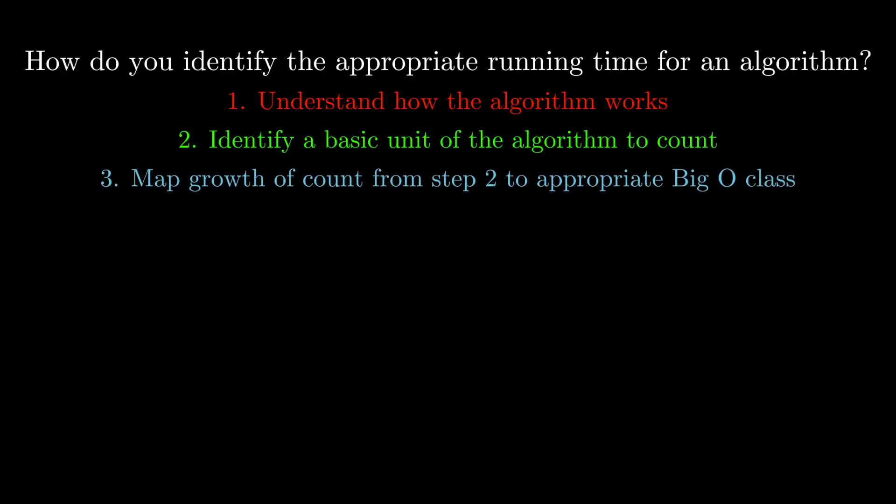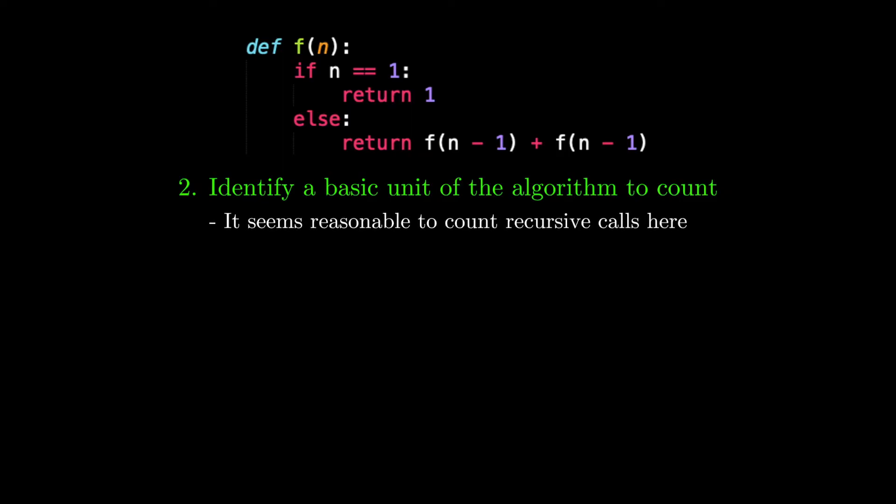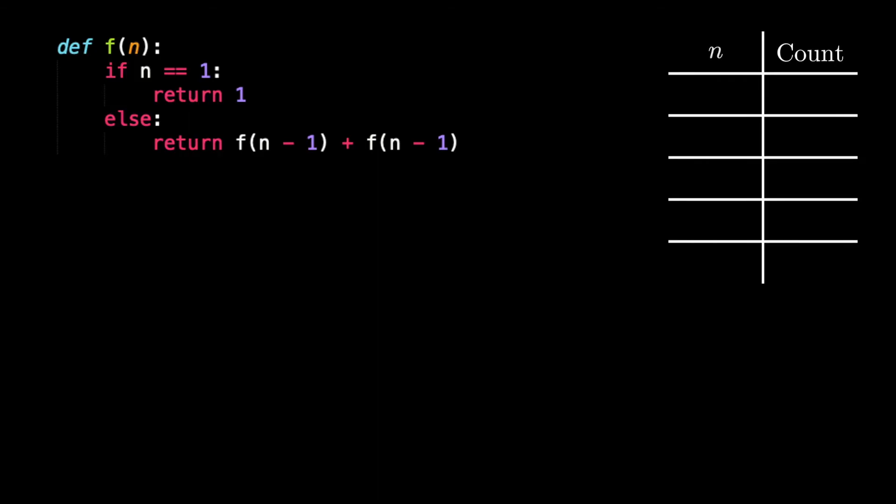Let's now see these three steps in action with an example. Suppose we were asked to find the running time of the following function. Let's start with step one. The function doesn't look too complicated. We see that it's a recursive function with the base case of n equals 1 and a recursive case that returns the sum of two recursive calls to f on n minus 1. The next step is to identify a simple unit that we should count. Here, the most reasonable option seems to be to count the number of calls to the function f of n. Let's take a look at a few example inputs and get a sense of these counts.